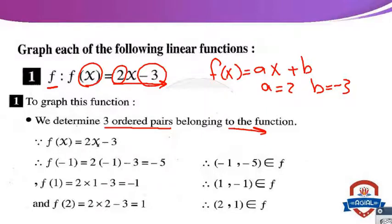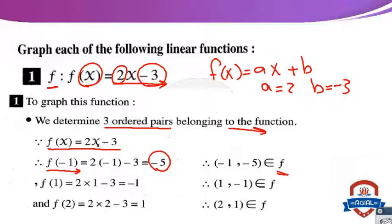f(x) equals 2x minus 3. f(−1) equals 2 times negative 1 minus 3 equals negative 2 minus 3 equals negative 5. So the ordered pair (−1, −5) belongs to the function. f(1) equals 2 times 1 minus 3 equals 2 minus 3 equals negative 1. So the ordered pair (1, −1) belongs to the function.